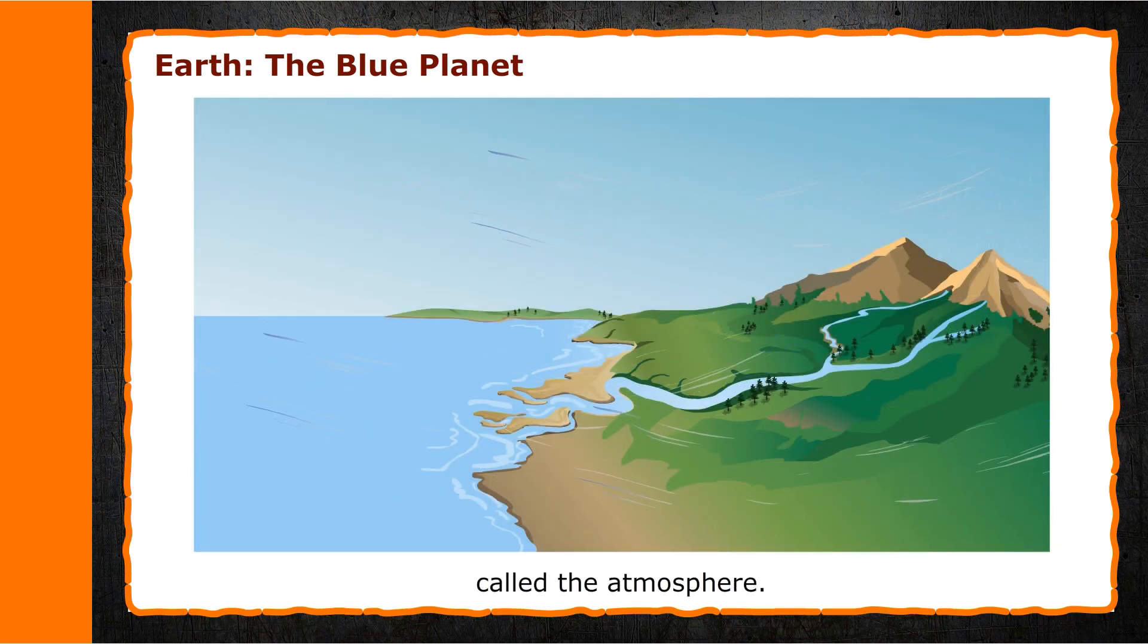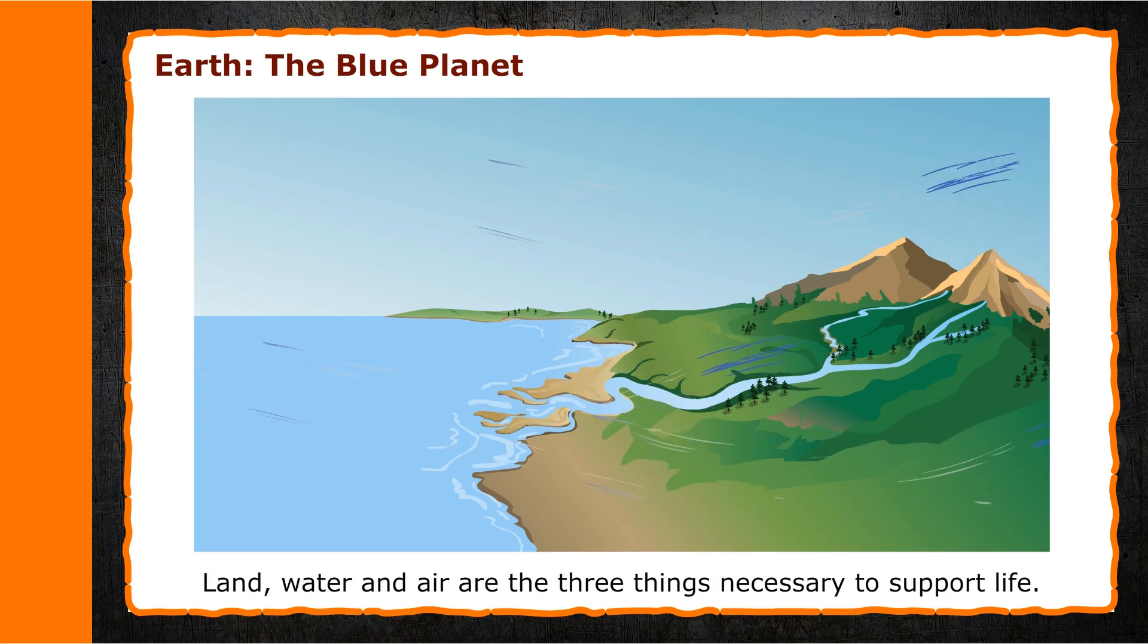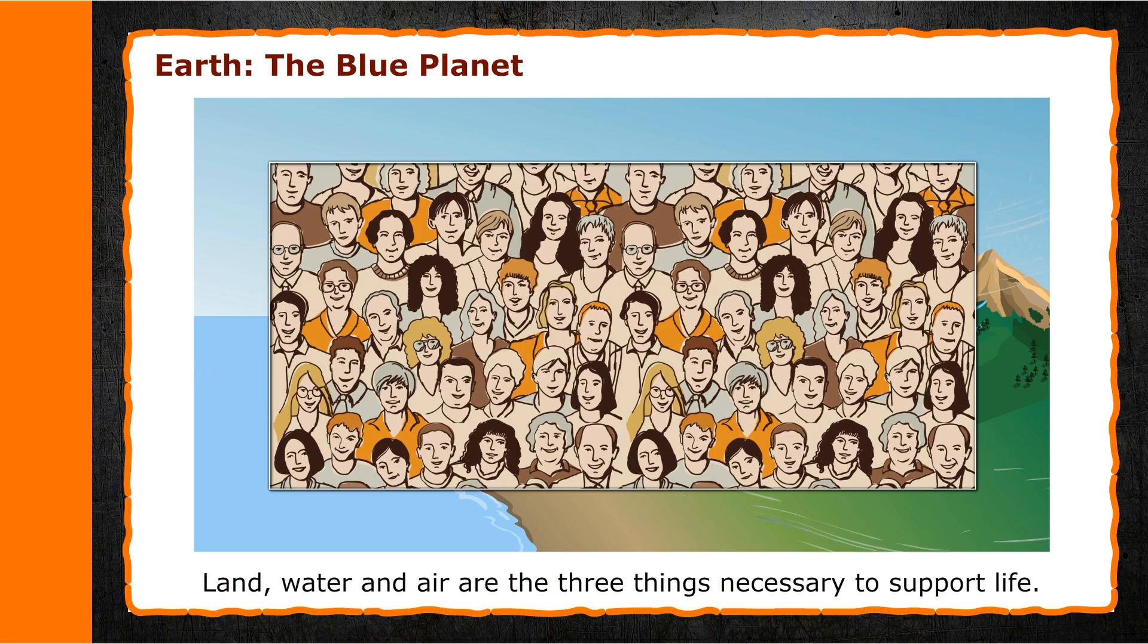Land, water, and air are the three things necessary to support life. Can you guess why our Earth is also called the blue planet?